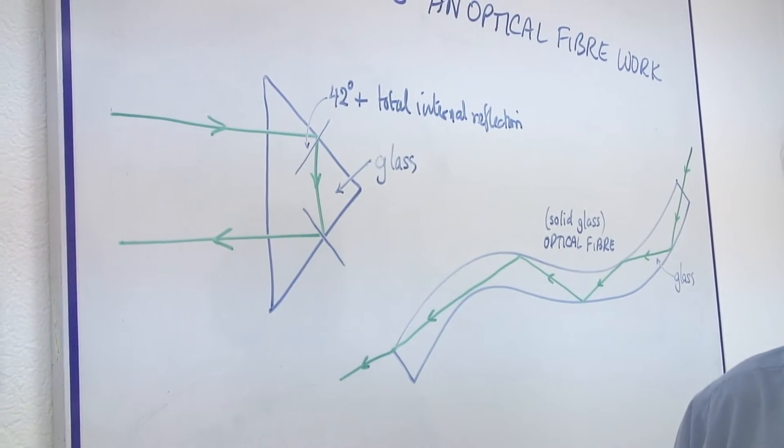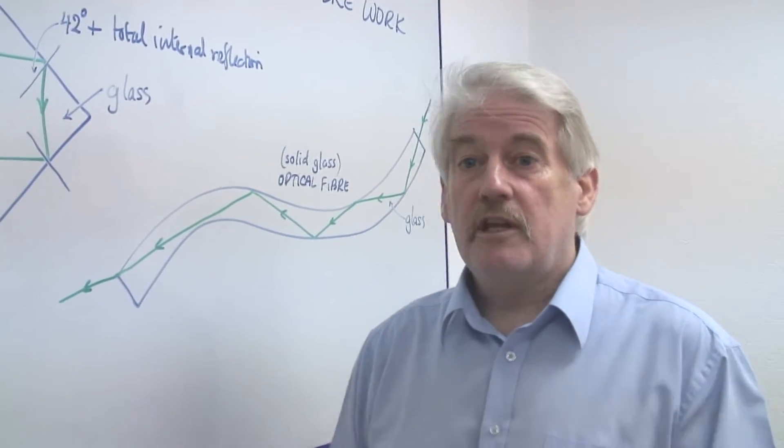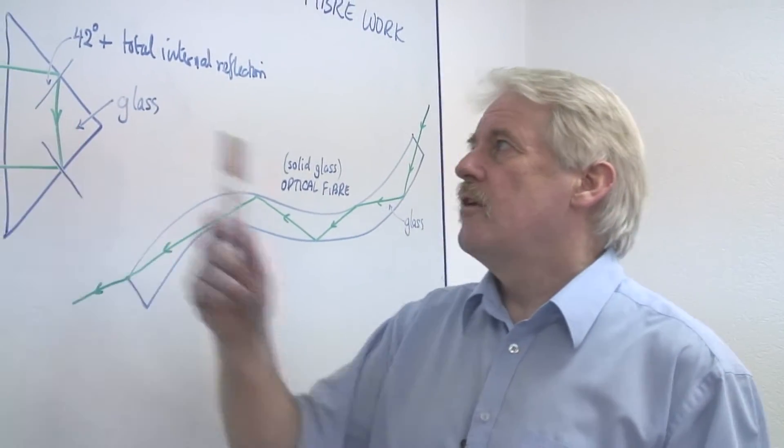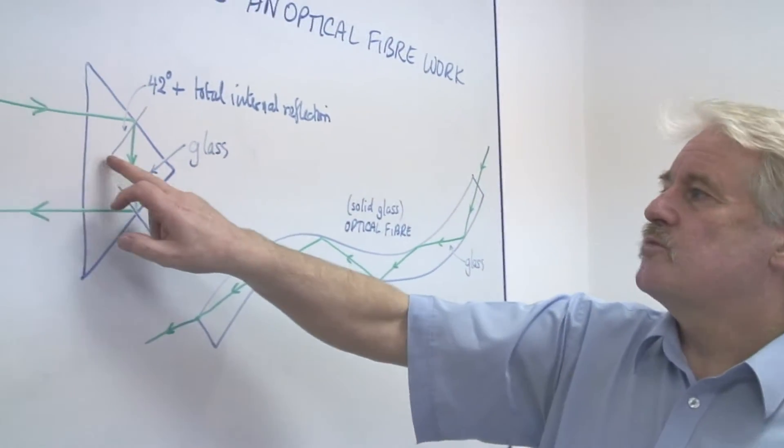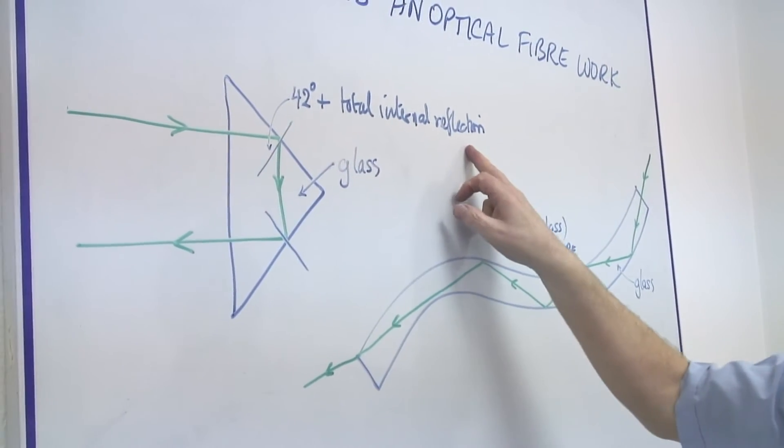This is used in binoculars to extend the length of the tube, so that they can be quite small, instead of having to be long like a telescope. So in binoculars we see this arrangement already well known, this idea of total internal reflection.